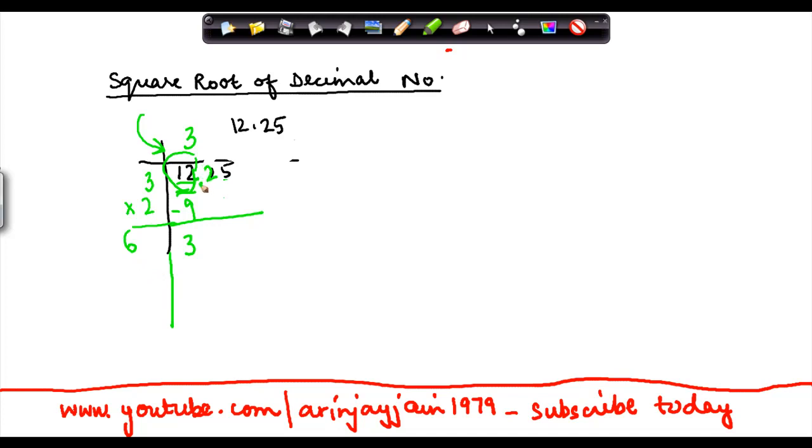Now after 12 there's a decimal, so I put a decimal here again, which is the number which I use here and here that will give me. I drop down this 25 here, the next pair.